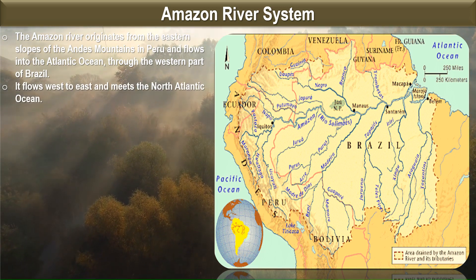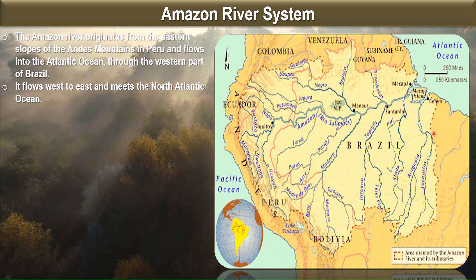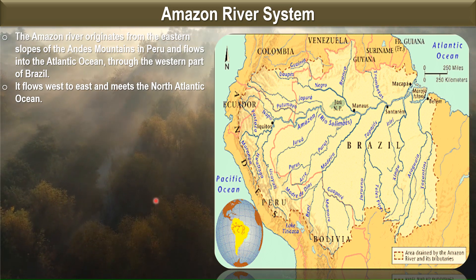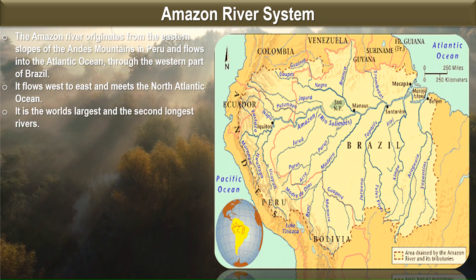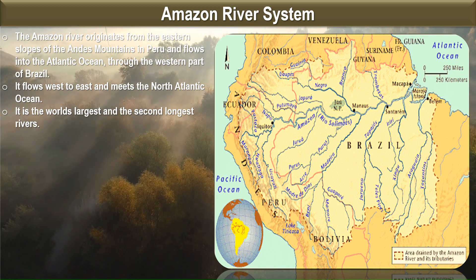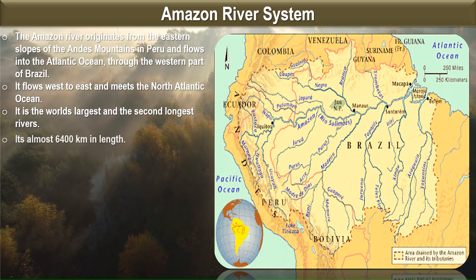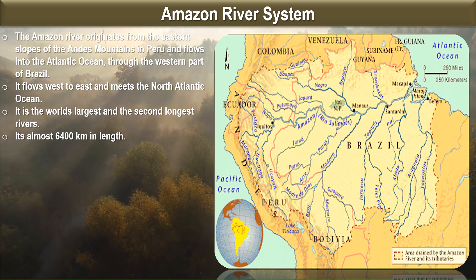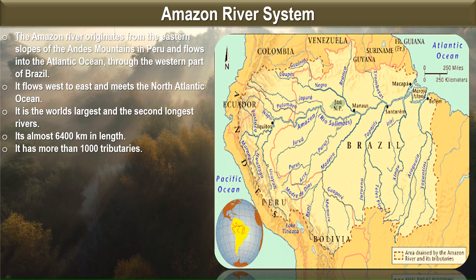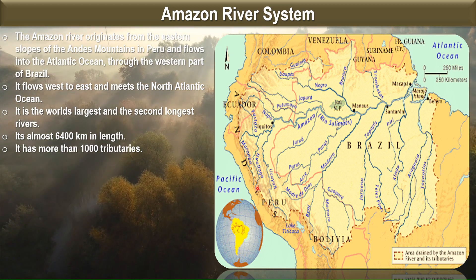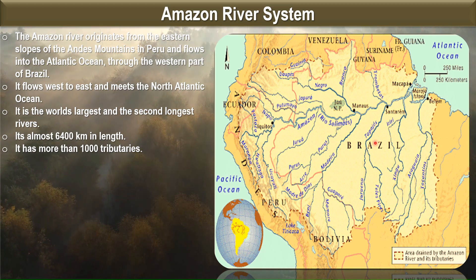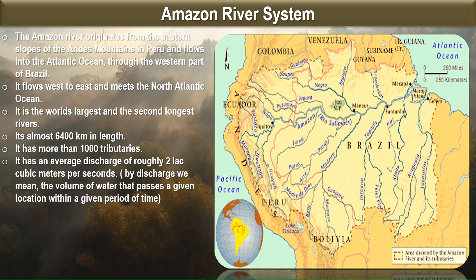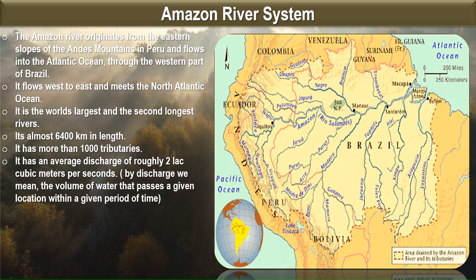The Amazon flows from west to east and meets the North Atlantic Ocean. It is the world's largest and the second longest river, with a length of almost 6,400 kilometers. It has more than 1,000 tributaries.